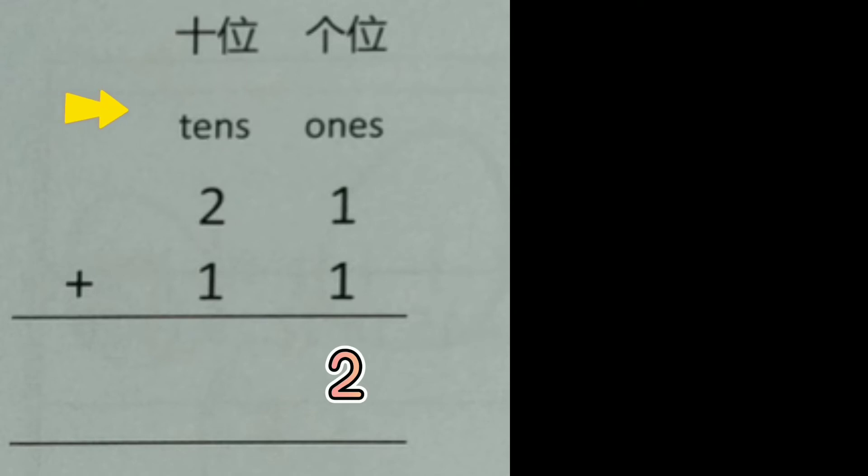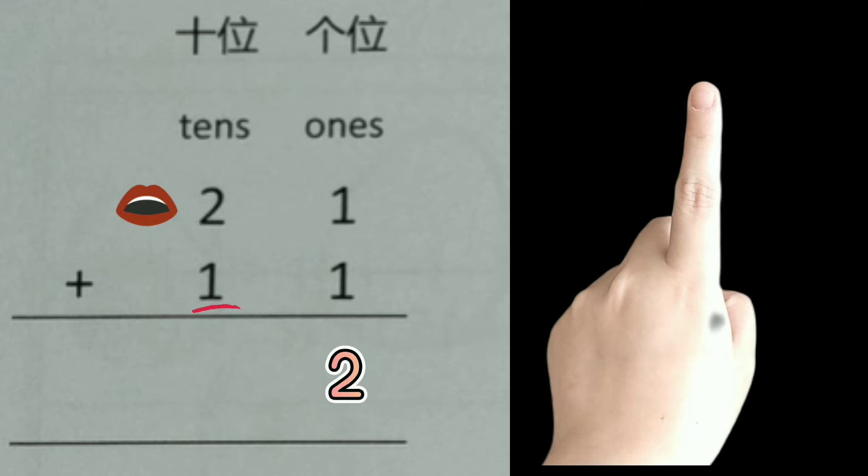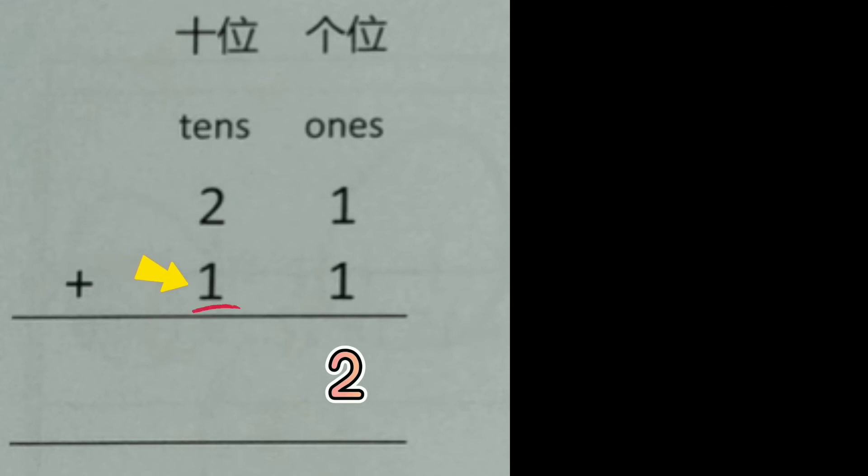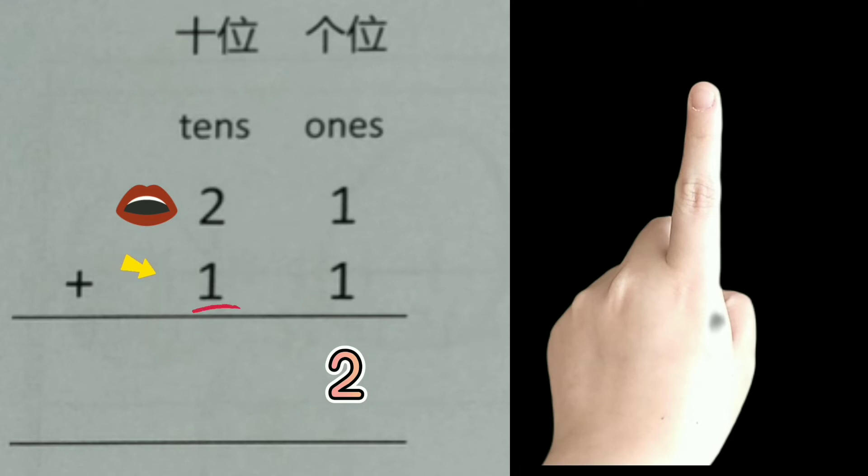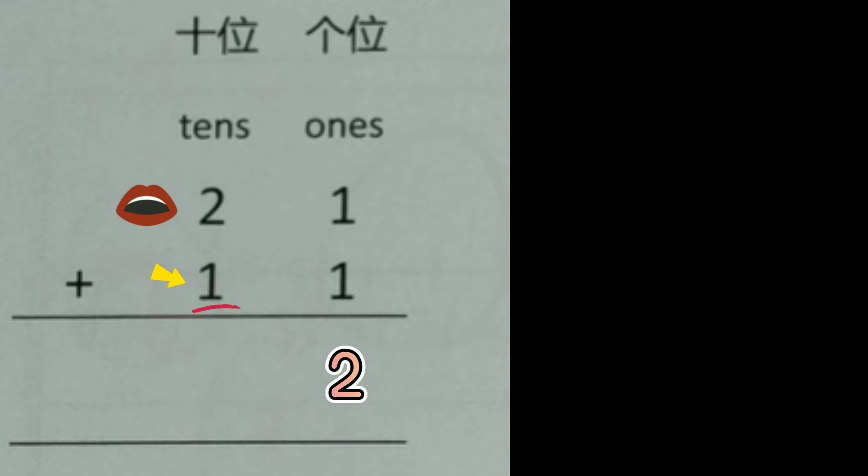We have done the ones column. Let's go to the columns of tens. 2 plus 1 equals how many? Underline the smaller number. Say the bigger number in the mouth: 2. And show the smaller number on your finger. Let's count: 2, 3. The answer is 3.